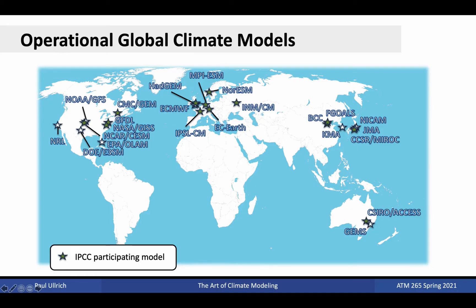Global climate modeling is widely viewed as an important endeavor, as GCMs are powerful tools for understanding the processes that shape the Earth system and the changes that may occur within the climate system in the future. Worldwide, there are dozens of global climate models that have been developed by a number of national and international organizations. Within the U.S., there are more than seven models that are used for scientific understanding and to shape policy.